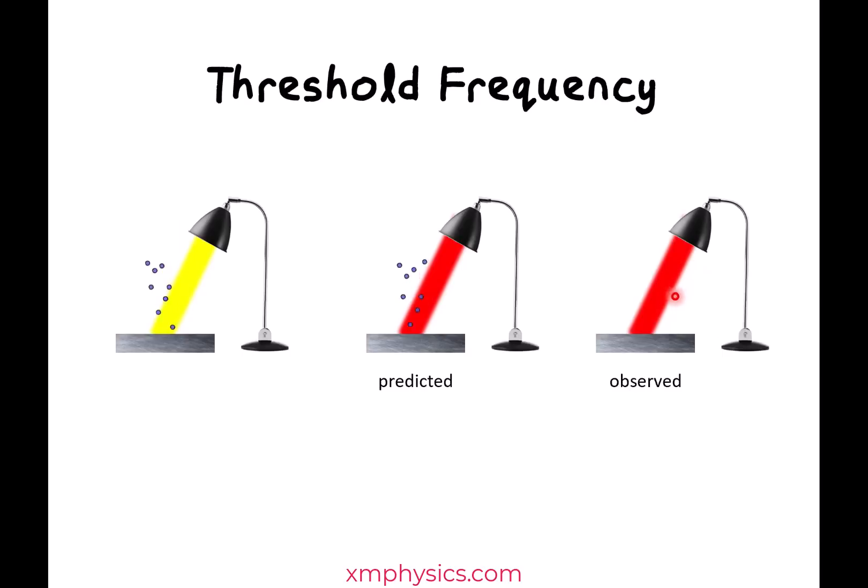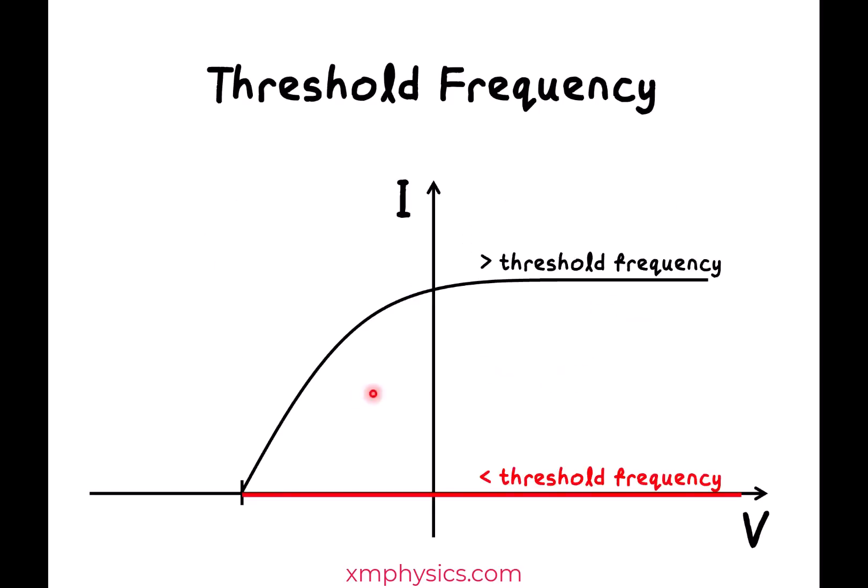It turns out there's always a frequency low enough when not a single photoelectron is liberated. So on the IV graph, you need a certain threshold frequency before you can observe photoelectric effect. If the frequency of the light is too low, then you get nothing. Now you understand why the physicists start to suspect that light is not a wave, right?